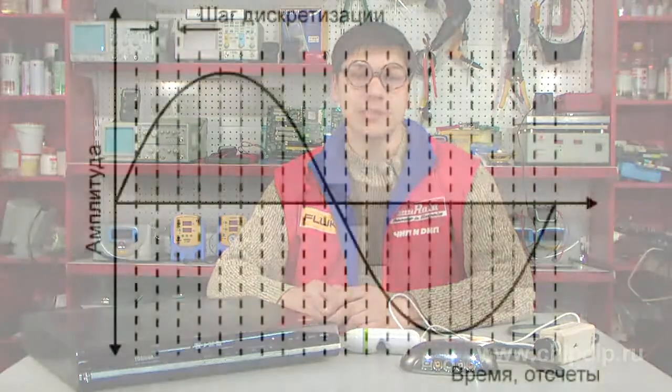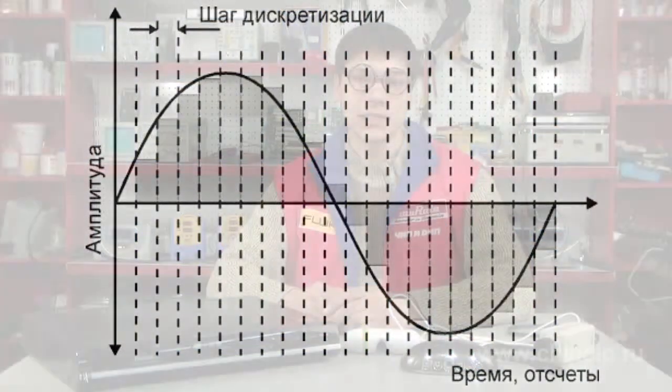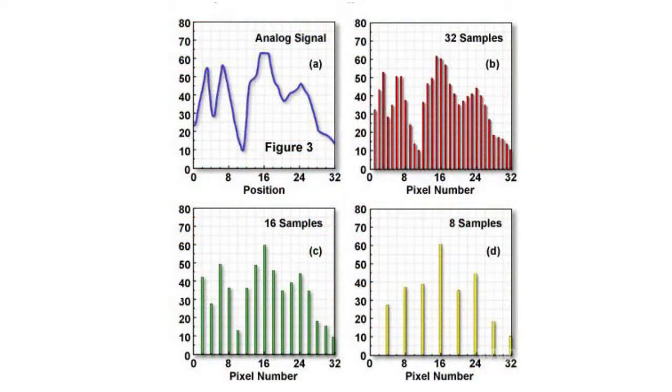Analog to digital signal conversion includes two stages: time sampling and amplitude quantization. Sampling means the signal is represented through a number of samples taken in equal time intervals. A key issue of the first stage of analog to digital signal conversion — digitization — is to select the analog signal sampling frequency.